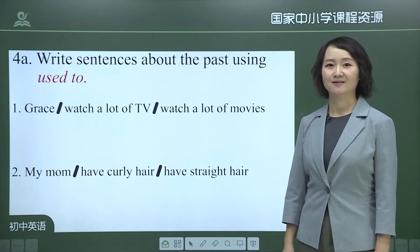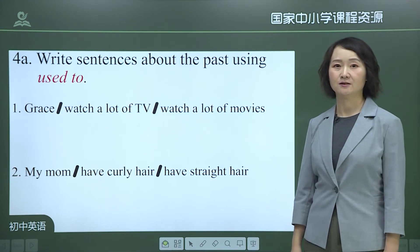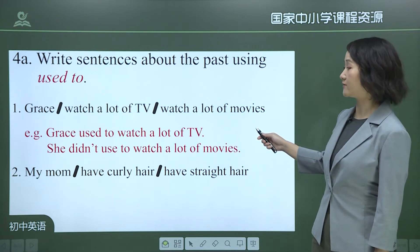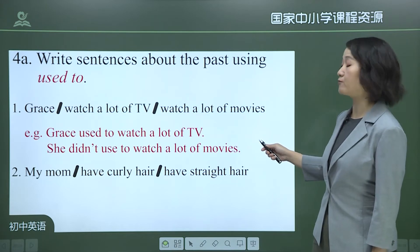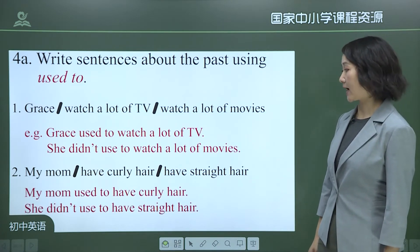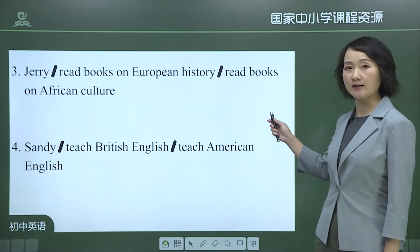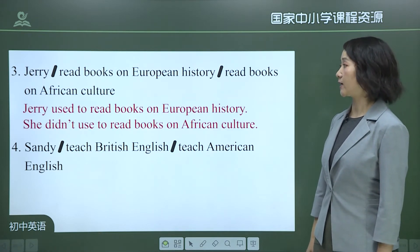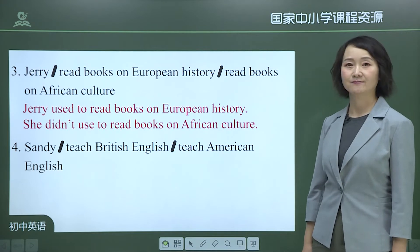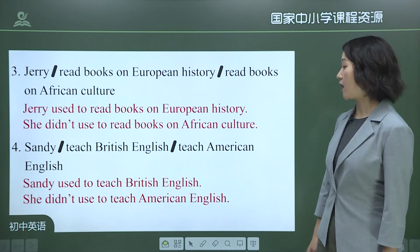Here comes more practice. Write sentences about the past using 'used to.' Grace used to watch a lot of TV. She didn't use to watch a lot of movies. My mom used to have curly hair. She didn't use to have straight hair. Jerry used to read books on European history. She didn't use to read books on African culture. Sandy used to teach British English. She didn't use to teach American English.